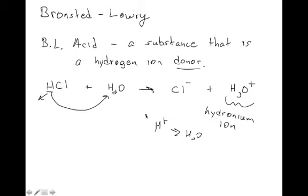One important thing about the definitions: a substance doesn't switch from acid to base just because you change the definition. If it's an Arrhenius acid, it's also going to be a Bronsted-Lowry acid — an acid is an acid regardless of which definition we're using. So a Bronsted-Lowry acid is something that donates hydrogen ions.